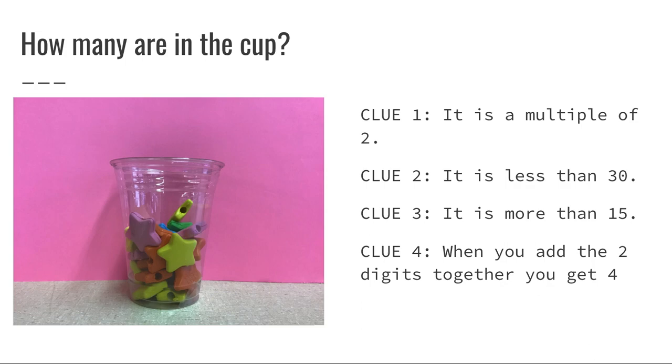So for example, if the answer was 12, say there were 12 erasers in that cup, if you were to add those digits together, one and two, you would get three. So we're looking for when you add the two digits, you get four.